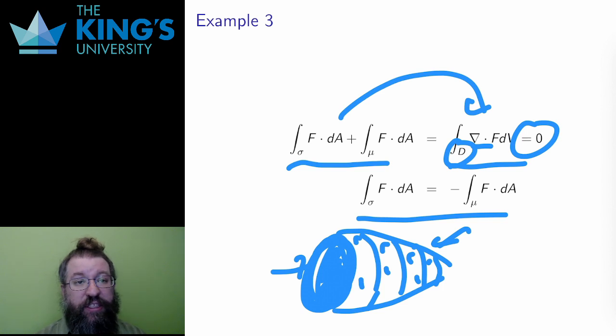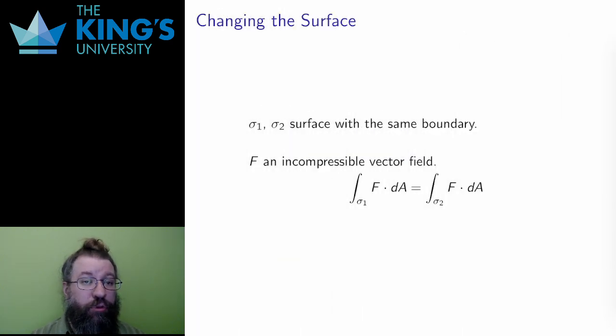And this actually gives a nice general observation. If two surfaces have the same boundary, and if F is incompressible, that is, has zero divergence, then the two integrals have to be the same at least up to a plus minus. And the sign here will depend on the direction of the normal, on the orientation, as it always does for flux integrals.